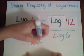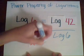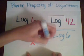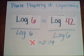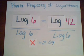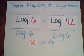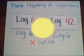So x equals 2.09. And that's how you use the power property of logarithms to solve for an unknown in the exponent.